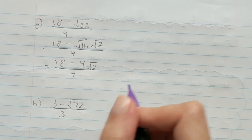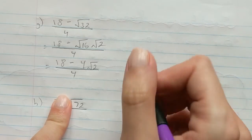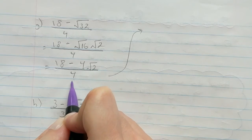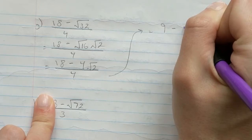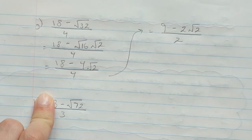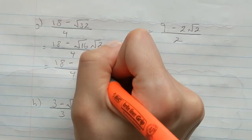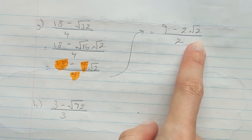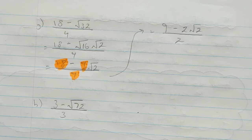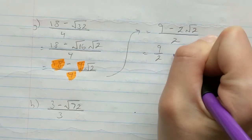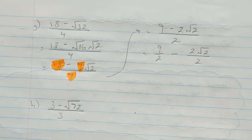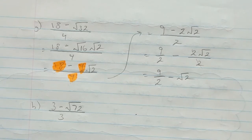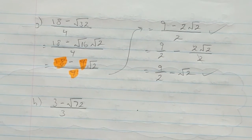Now we can reduce the fraction by dividing everything by 2: 18 ÷ 2 = 9, 4 ÷ 2 = 2, and 4 ÷ 2 = 2. This gives us (9 - 2√2) ÷ 2. If you want to continue, you can split this into 9/2 - (2√2)/2, and dividing out the 2 gives 9/2 - √2. Either answer — (9 - 2√2)/2 or 9/2 - √2 — is perfectly acceptable.